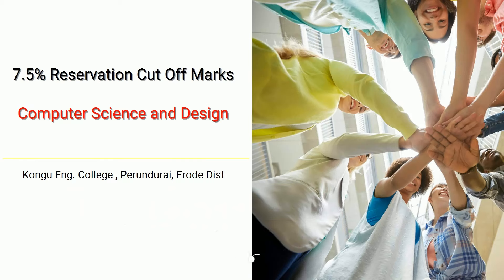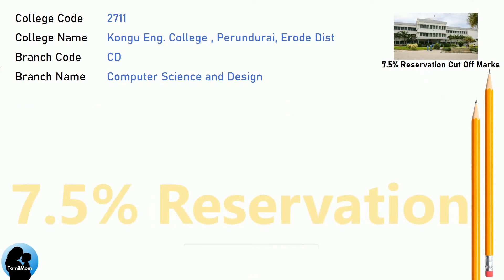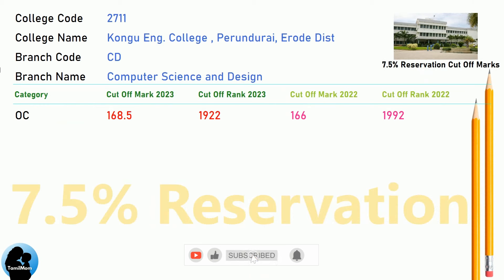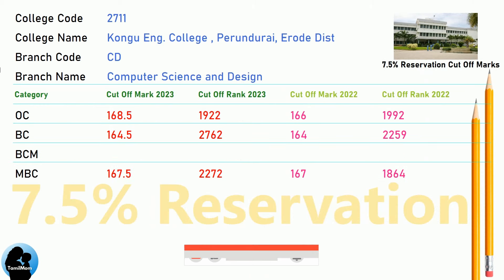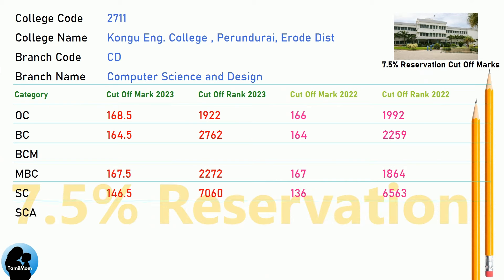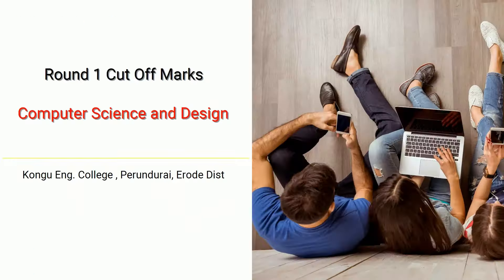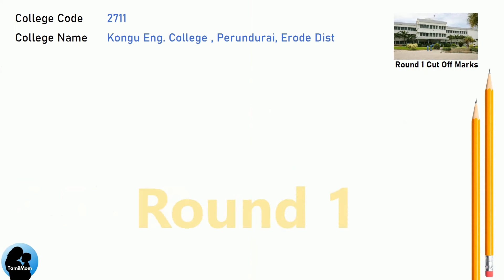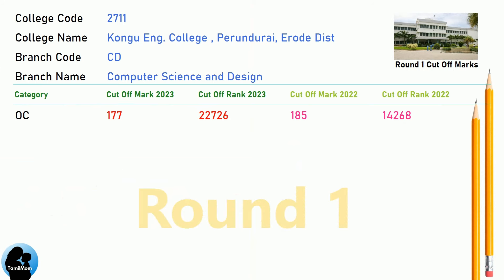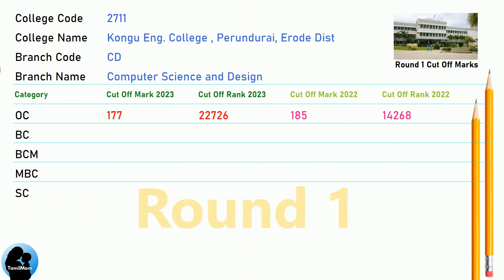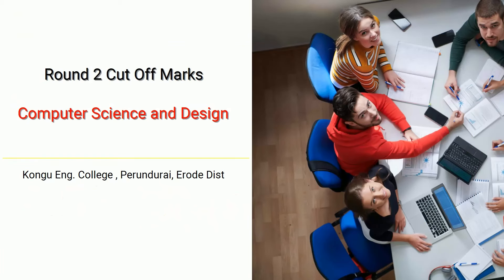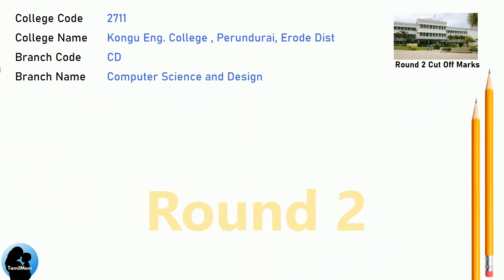DNA 7.5 Reservation Cut-Off for Kongu Engineering College in Computer Science and Design. DNA Round 1 Cut-Off for Kongu Engineering College in Computer Science and Design. DNA Cut-Off for Kongu Engineering College in Computer Science and Design.